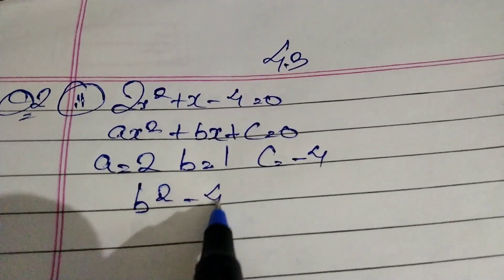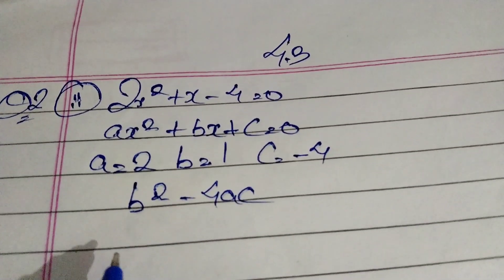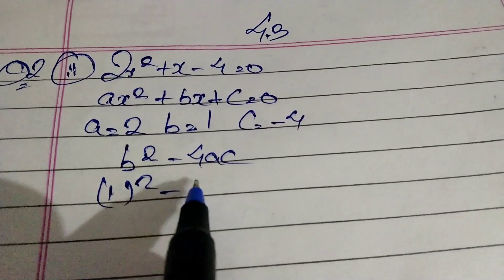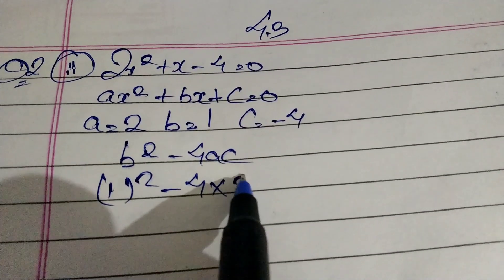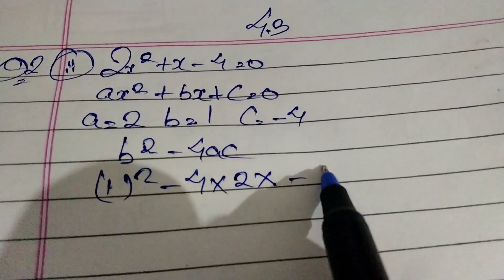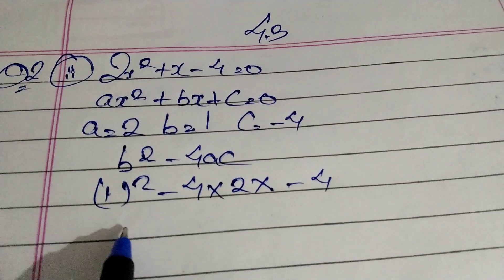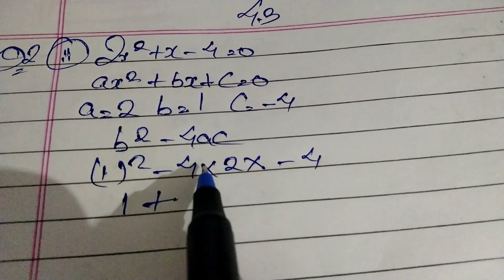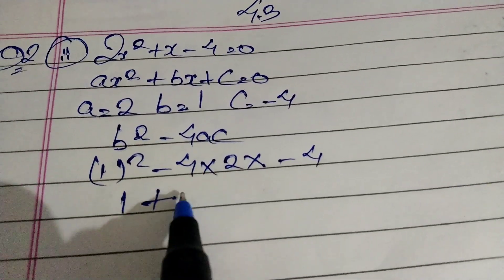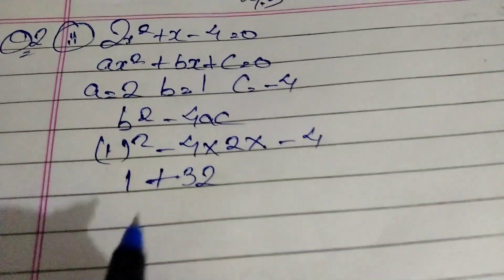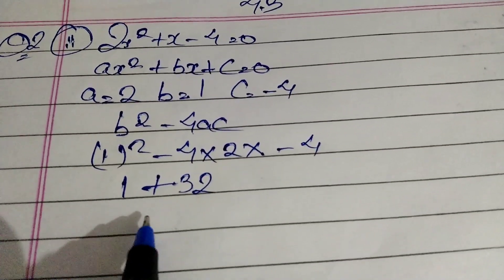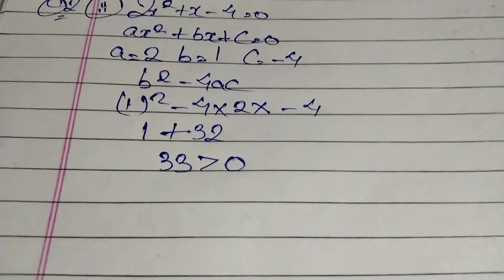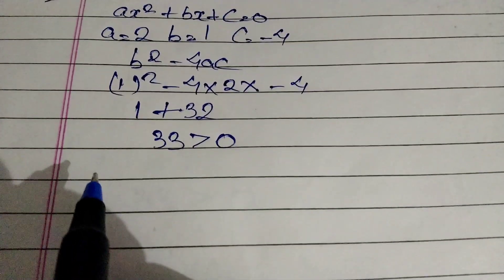So b² minus 4ac: 1² minus 4 into a (which is 2) into c (which is minus 4). So 1 minus minus gives plus, 4 times 2 times 4 is 32. So 1 plus 32 equals 33, which is greater than 0. Since it is greater than 0, different roots are possible.